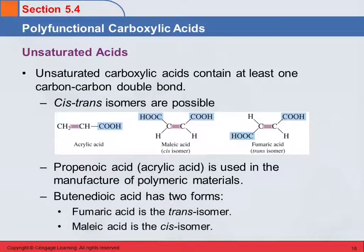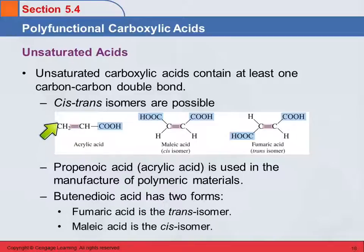When you have unsaturated acids, you can have cis-trans isomers. Unsaturated means you have at least one carbon-carbon double bond, or possibly a triple bond. With the double bond, you have the possibility for cis-trans isomers. Here's acrylic acid, which does not have cis-trans isomers because on one side of the double bond, that carbon has two hydrogens. To have cis-trans isomers, both carbons have to have two different groups.